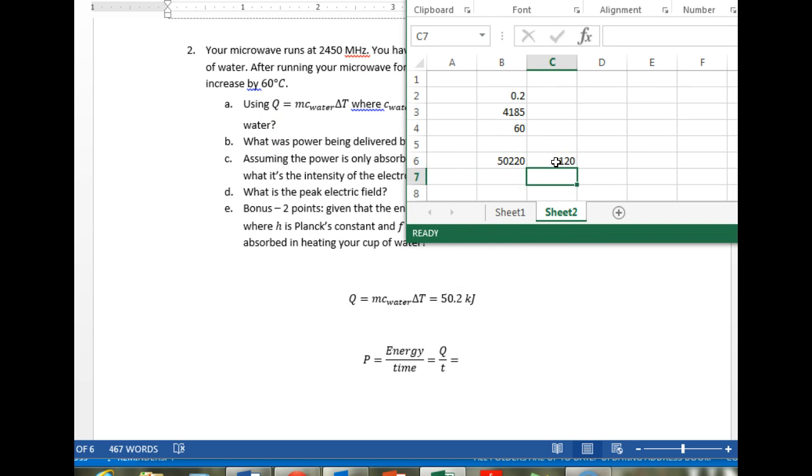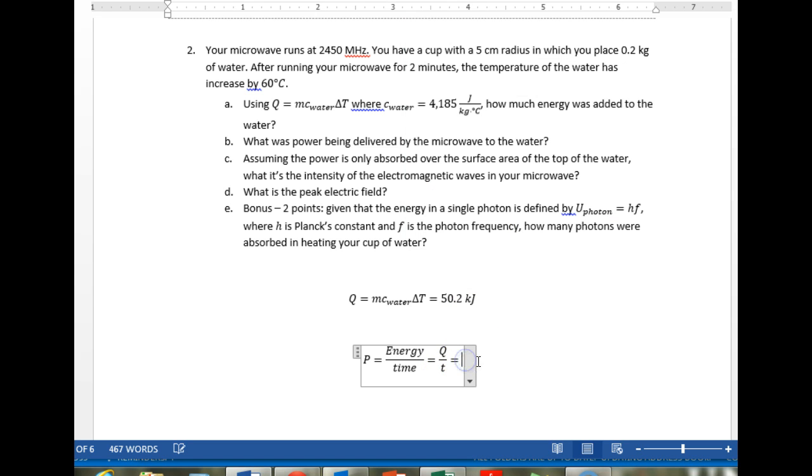So we've got 120 seconds, 50.2 kilojoules. And the power is 418.5 watts, 418.5 watts. A watt is a joule per second.